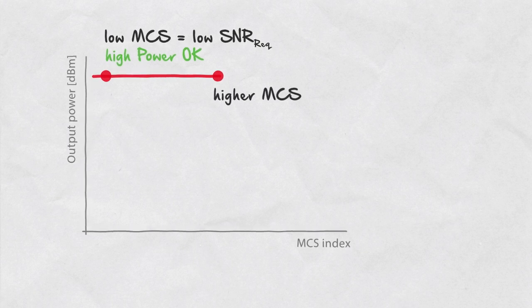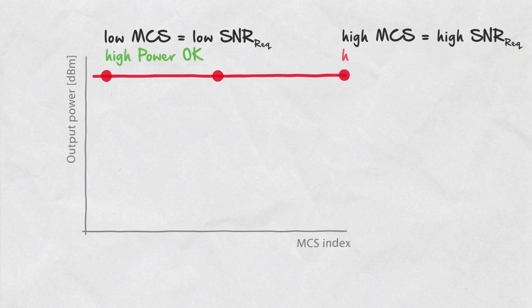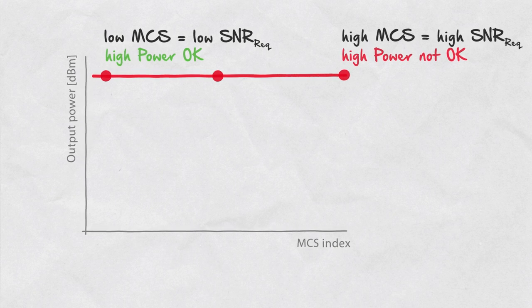On the contrary, higher MCS rates require increasing SNR levels. Here if we try to use high output power for high MCS rate, the added noise due to the amplifier non-linearity can increase the error rate of the data transfer beyond acceptable level.